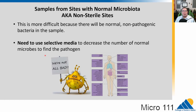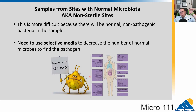Now to non-sterile sites — sites with normal microbiota. This presents a problem because culturing them will reveal all kinds of bacteria, and not all bacteria in our body are bad. To separate the normal microbiota from infection-causing ones, we need to use selective media to decrease the number of normal microbes and sort out the pathogenic ones. Selective media is a must for non-sterile sites.